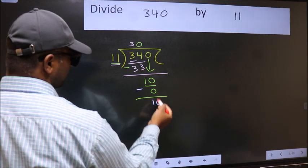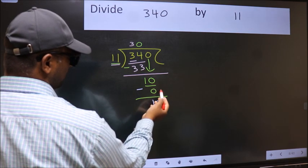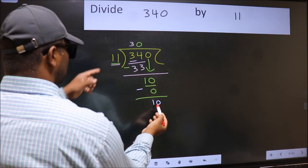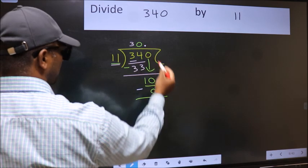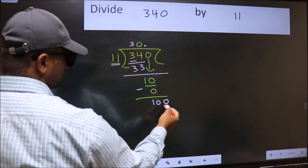Over here, we did not bring any number down. And 10 is smaller than 11. So now you can put dot and take 0, so 100. A number close to 100 in 11 table is 11 nines, 99.